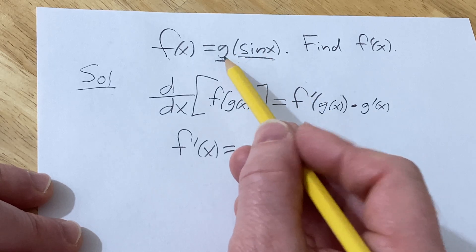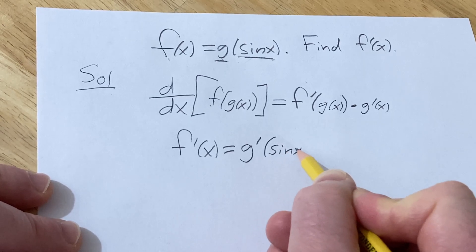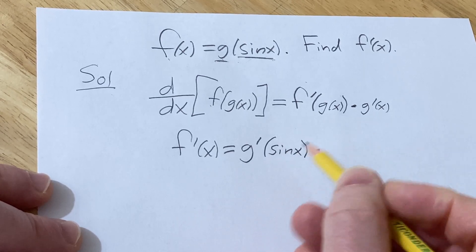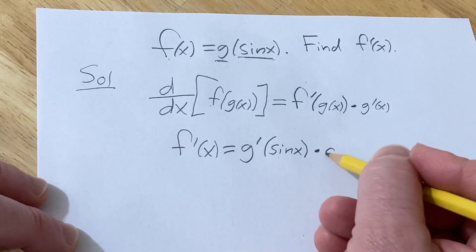So you take the derivative of the outside, then you leave the inside untouched, and then times the derivative of the inside function. The inside function is sin, so its derivative is cosine.